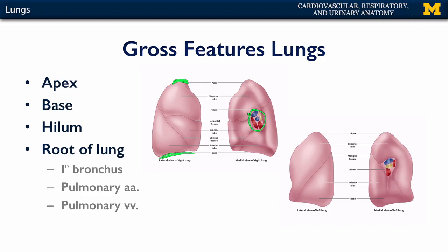The hilum contains the root of the lung. The root of the lung consists of the primary bronchus that serves that lung and the pulmonary arteries and veins of that lung as well. So the hilum is the area, and the root of the lung are its contents.